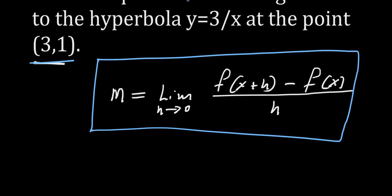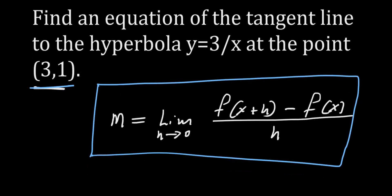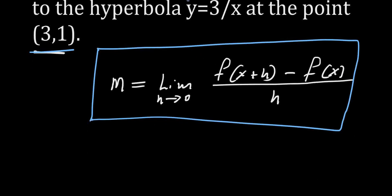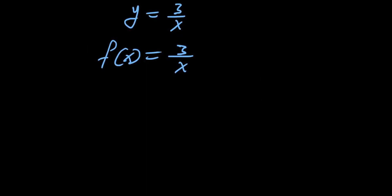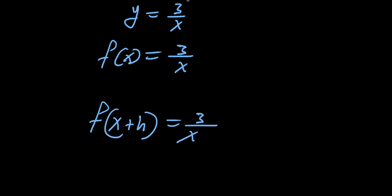From the question we have y equals 3 over x, so we can write this as f(x) equals 3 over x. And therefore f(x+h) is equal to 3 over x plus h.